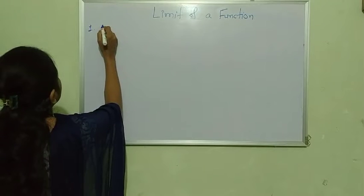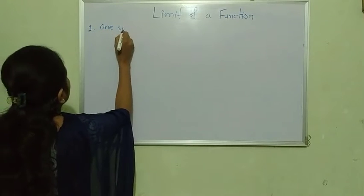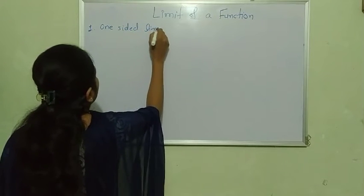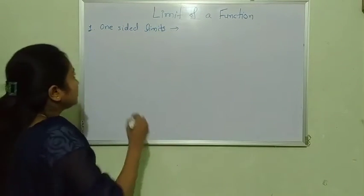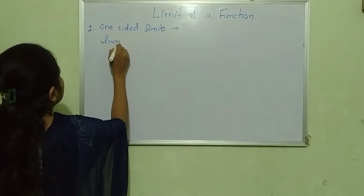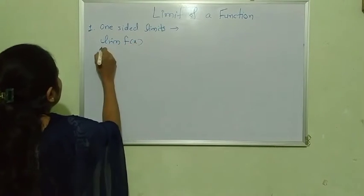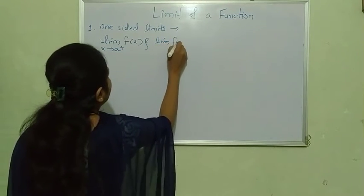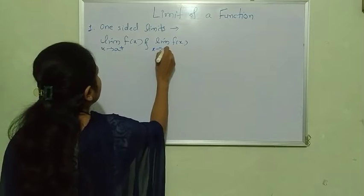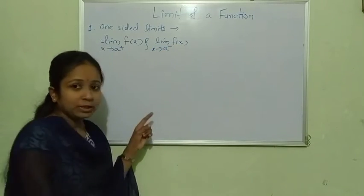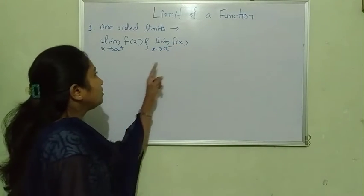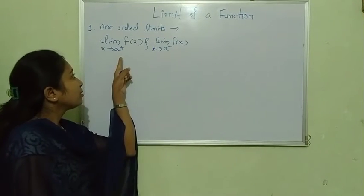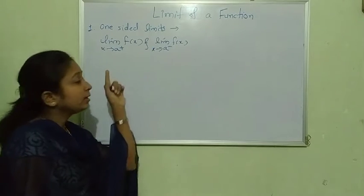The first definition is one-sided limits. One-sided means either left side limit or right side limit. The limit of f(x) as x tends to a⁺ is the right side limit, and the limit of f(x) as x tends to a⁻ is the left side limit. If these limits exist, they are called one-sided limits.